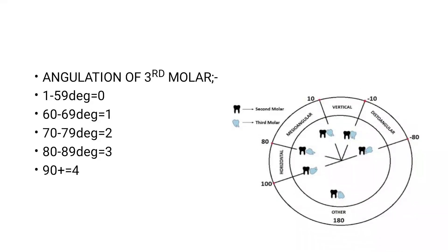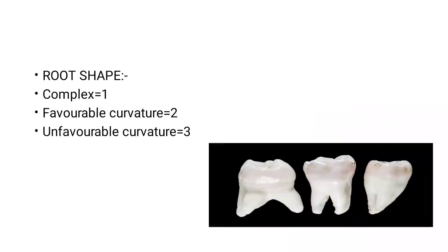Now angulation of the third molar: if the angle is between 1 degree to 59 degrees, it is scored zero. As the angulation increases, the difficulty increases. If the angulation ranges from 60 to 69 it is scored one, 70 to 79 scored two, 80 to 89 scored three, and 90 degrees or plus scored four.